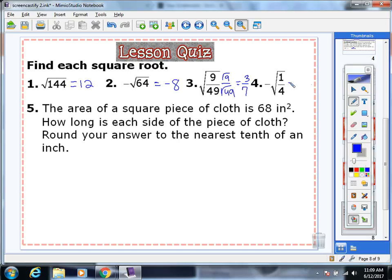Negative 1 times the square root of 1 fourth is going to be negative. The square root of 1 is 1, the square root of 4 is 2. The negative sign could go out in front of the fraction bar, or with the numerator, or with the denominator, but there can only be one negative sign.